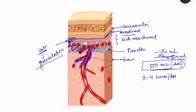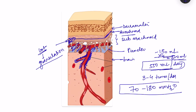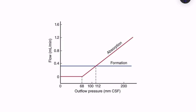Normal CSF pressure is 70 to 180 millimeters of water. The CSF pressure value is maintained by the rate of reabsorption of CSF. In a graph where the x-axis shows outflow pressure in millimeters and the y-axis shows flow in ml per minute, the rate of formation is almost constant — it is not dependent on CSF pressure.